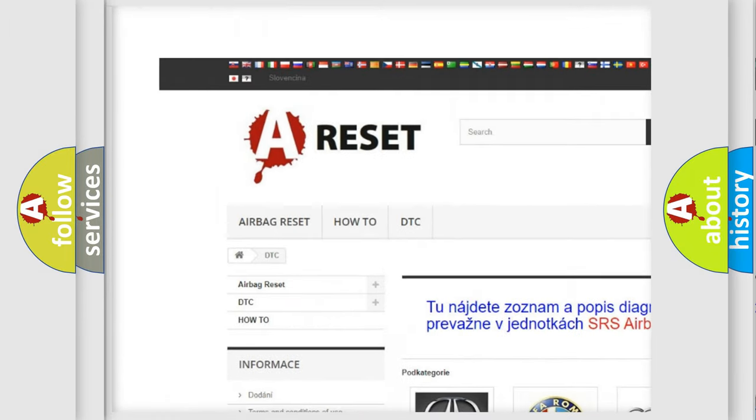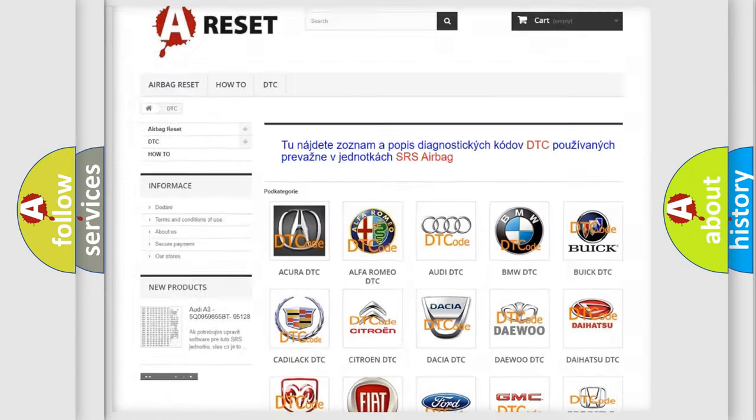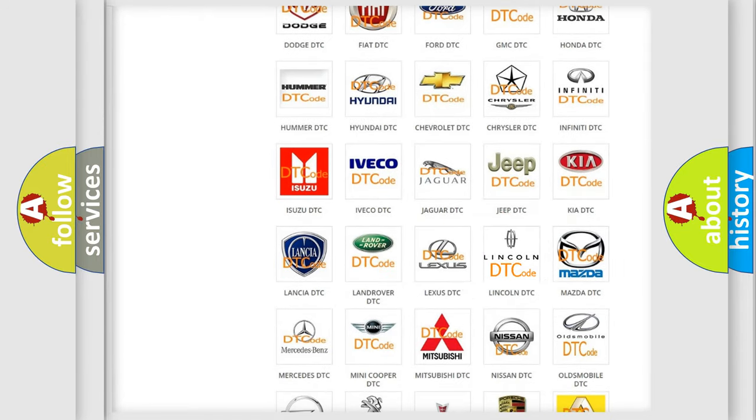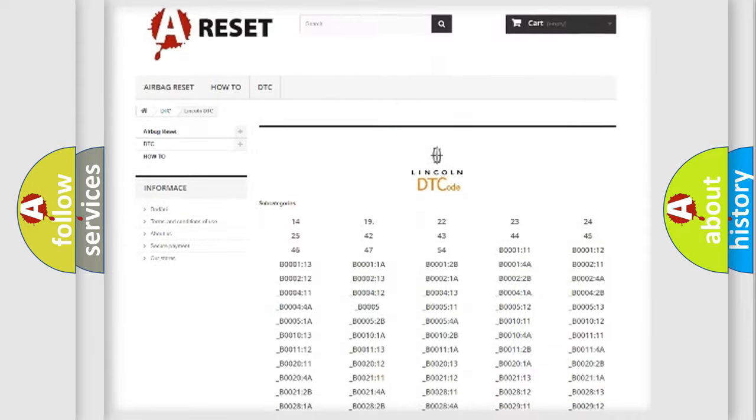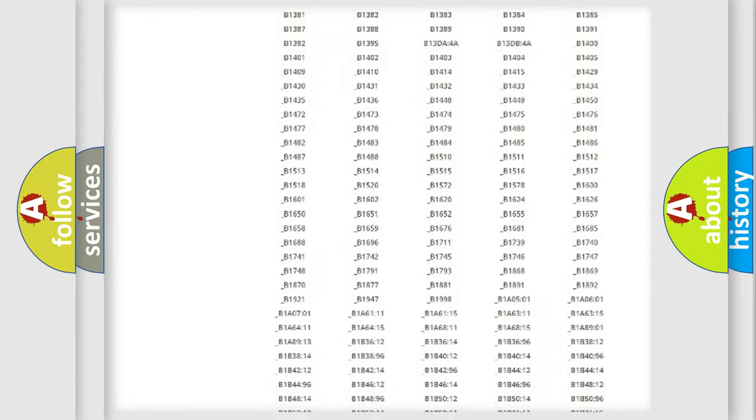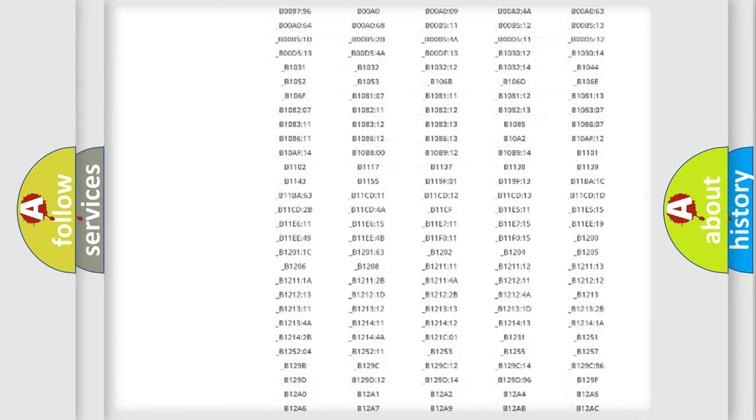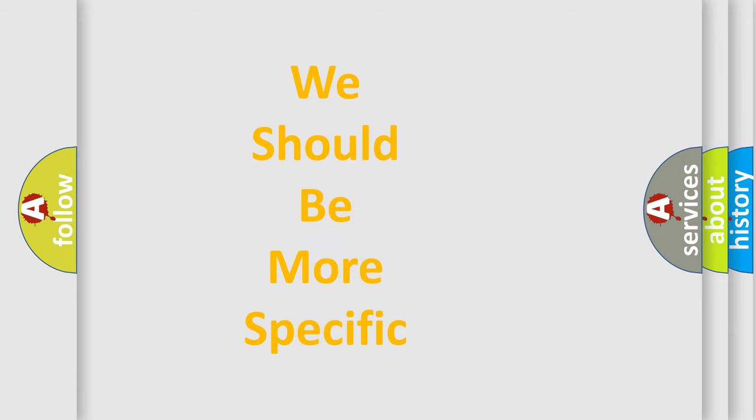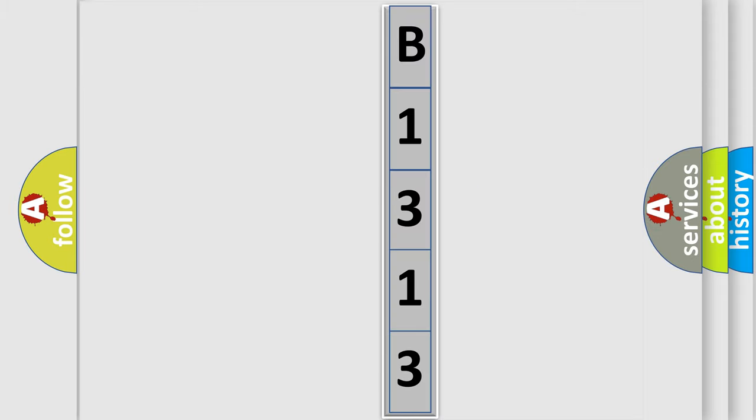Our website airbagreset.sk produces useful videos for you. You do not have to go through the OBD2 protocol anymore to know how to troubleshoot any car breakdown. You will find all the diagnostic codes that can be diagnosed in vehicles. Also many other useful things. The following demonstration will help you look into the world of software for car control units.